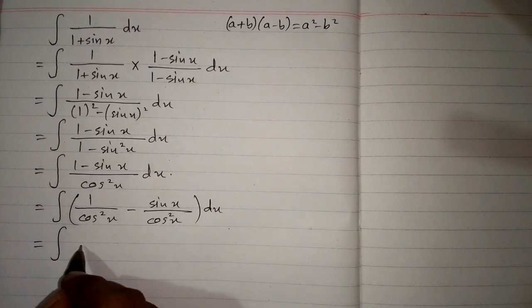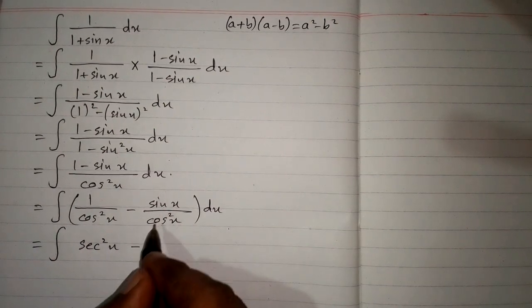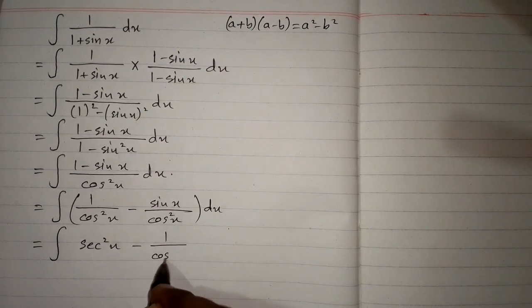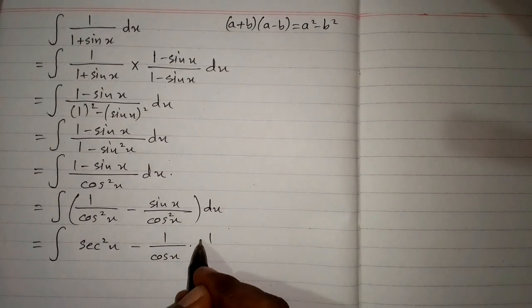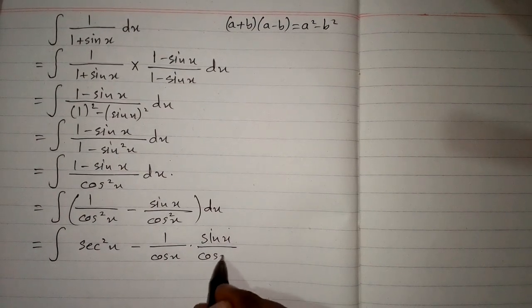1 upon cos square x is sec square x. And sin x upon cos square x can be written as 1 upon cos x multiplied by sin x upon cos x.